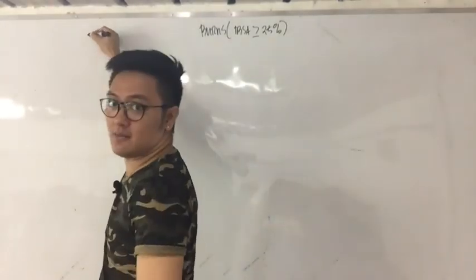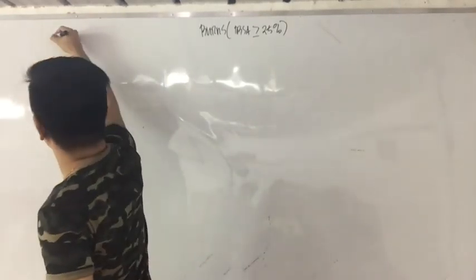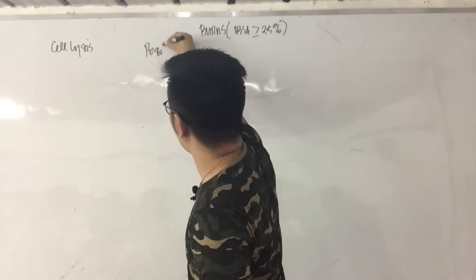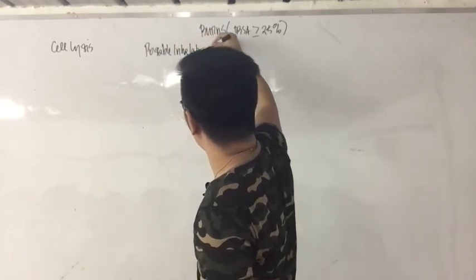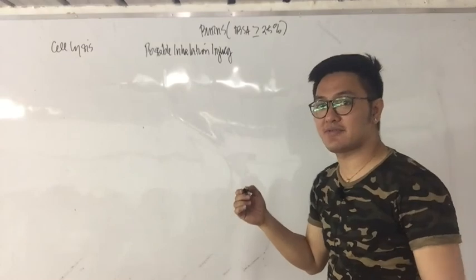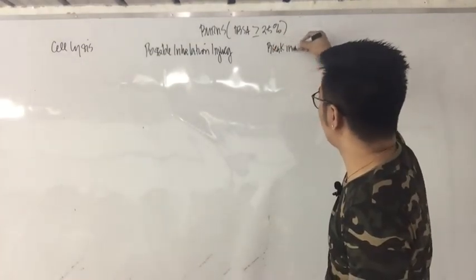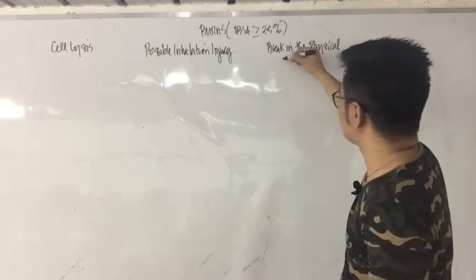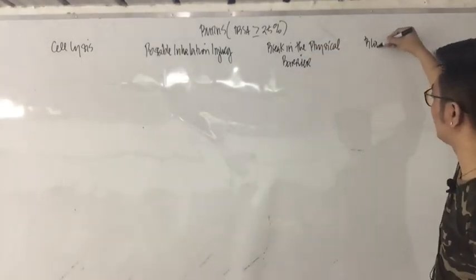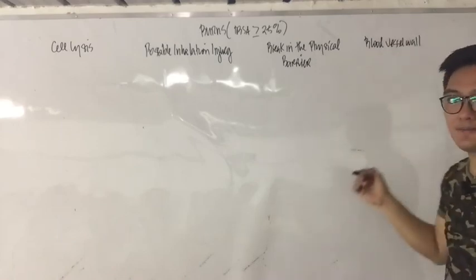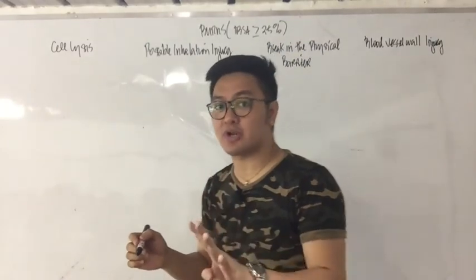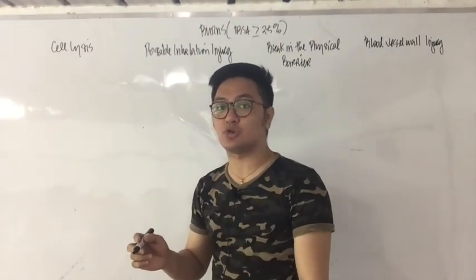First, there will be cell lysis. Second, there will be possible inhalation injury. Third, remember there is a break in the skin — the skin is considered the first line of defense — so there will be a break in the physical barrier. And last, there will be blood vessel wall injury. These are the four common concerns with major burn injury at TBSA of more than or equal to 25%.